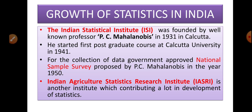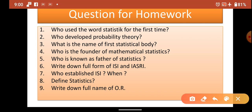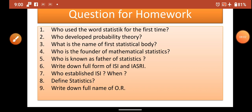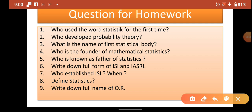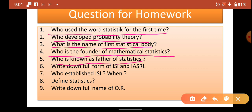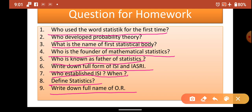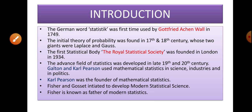Today's homework: Question 1 — who used the word 'statistic' for the first time? Answer: Gottfried Achenwall. Who developed the probability theory? What is the name of the first statistical body? Who is the founder of mathematical statistics? Who is known as the father of statistics? Write down the full forms of ISI and IASRI. Who established ISI and when? Define statistics. Write down the full form of Operational Research. Write all these questions and their answers in your fair book.